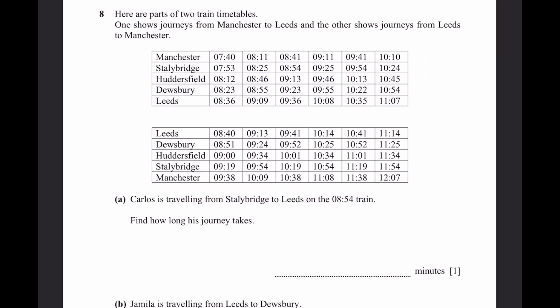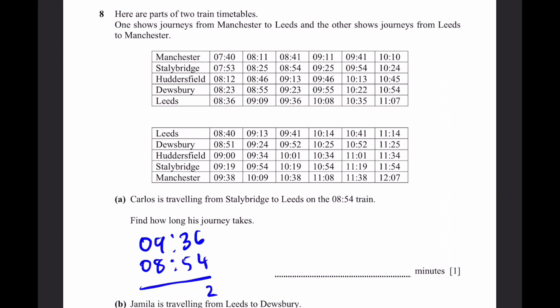Question 8. Here are parts of two train timetables — one for Manchester to Leeds and one for Leeds to Manchester. Part a: Carlos is traveling from Stanley Bridge to Leeds on the 8:54 train. Stanley Bridge departs 8:54 and arrives Leeds at 9:36. Subtracting: 9:36 minus 8:54 equals 42 minutes, remembering that 1 hour is 60 minutes.